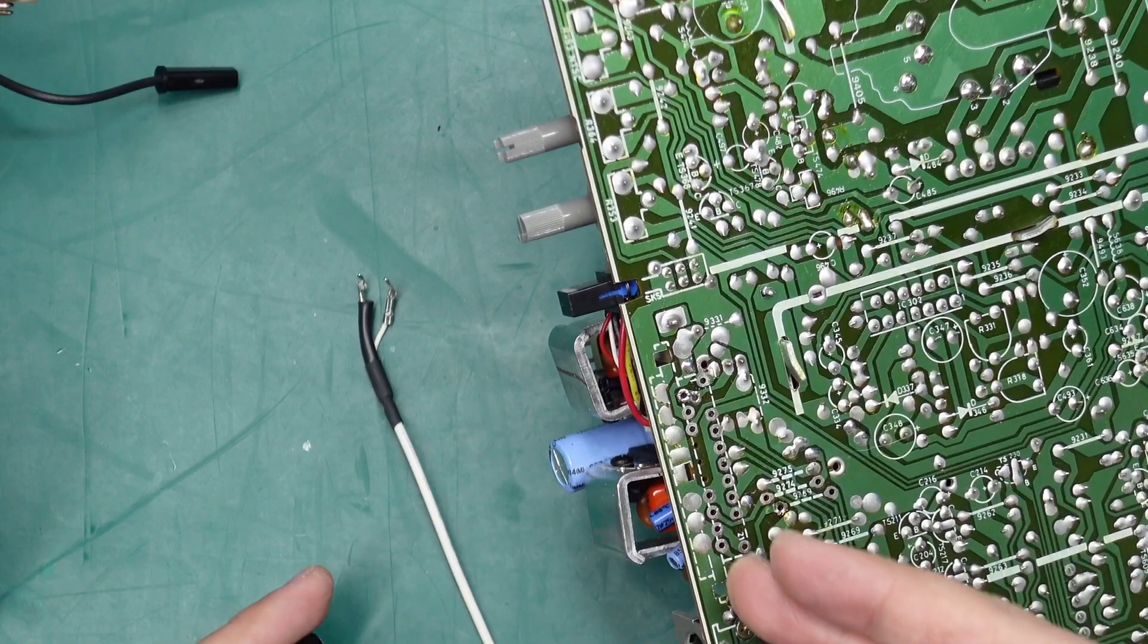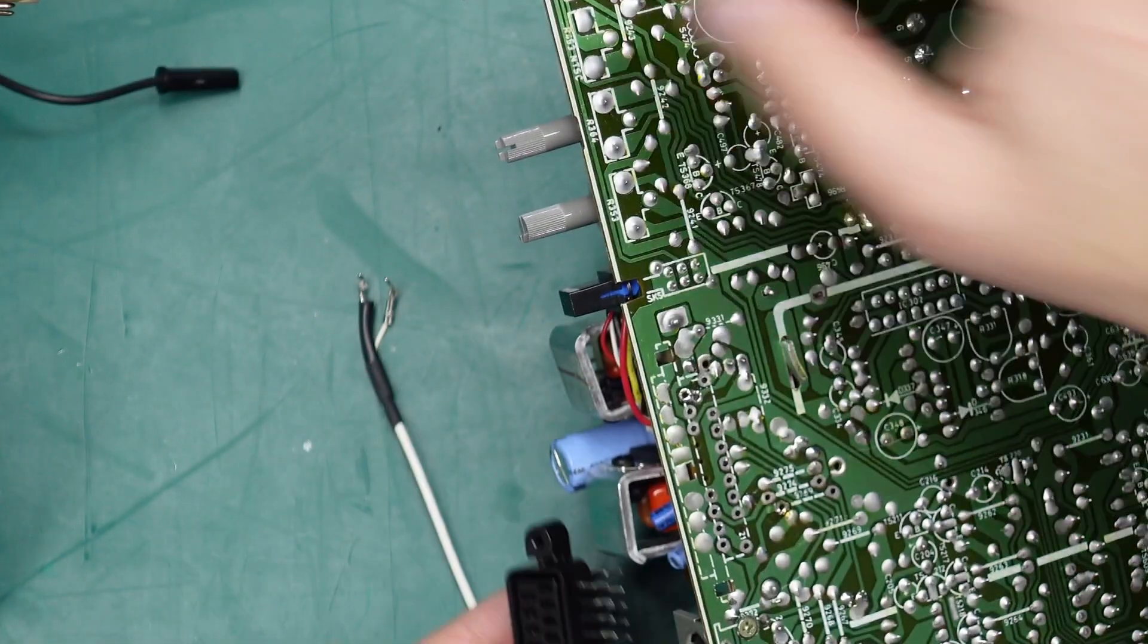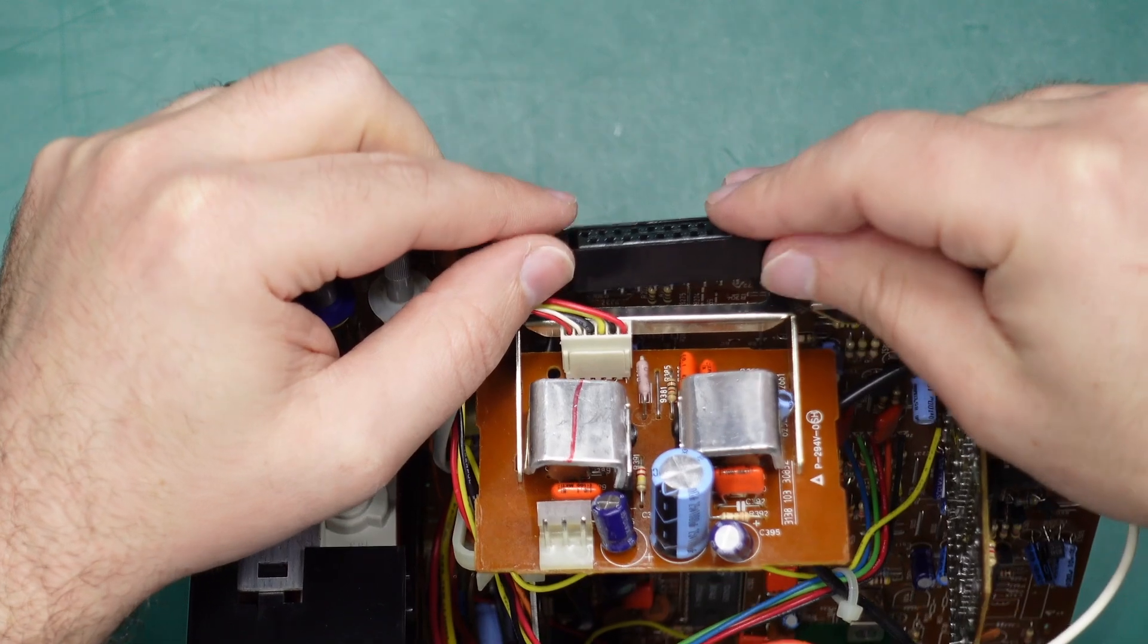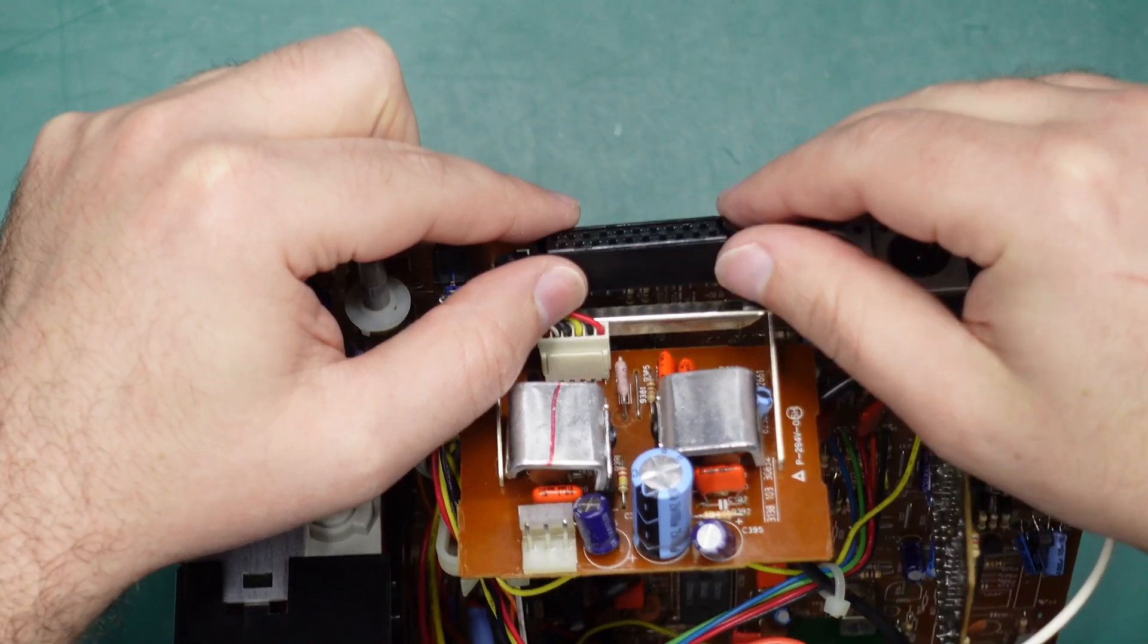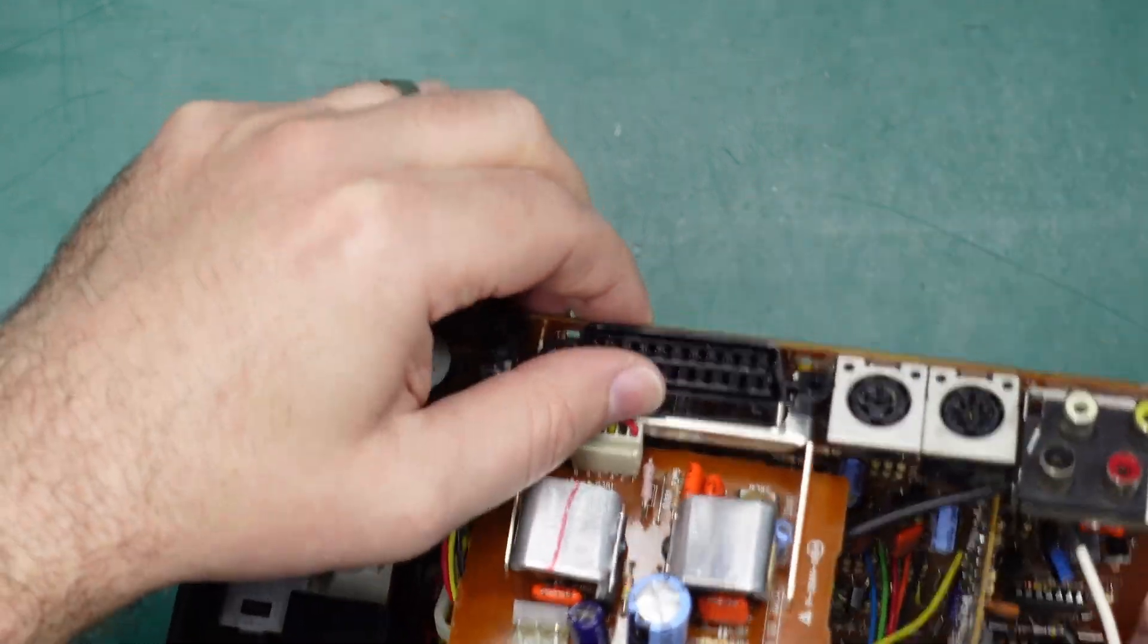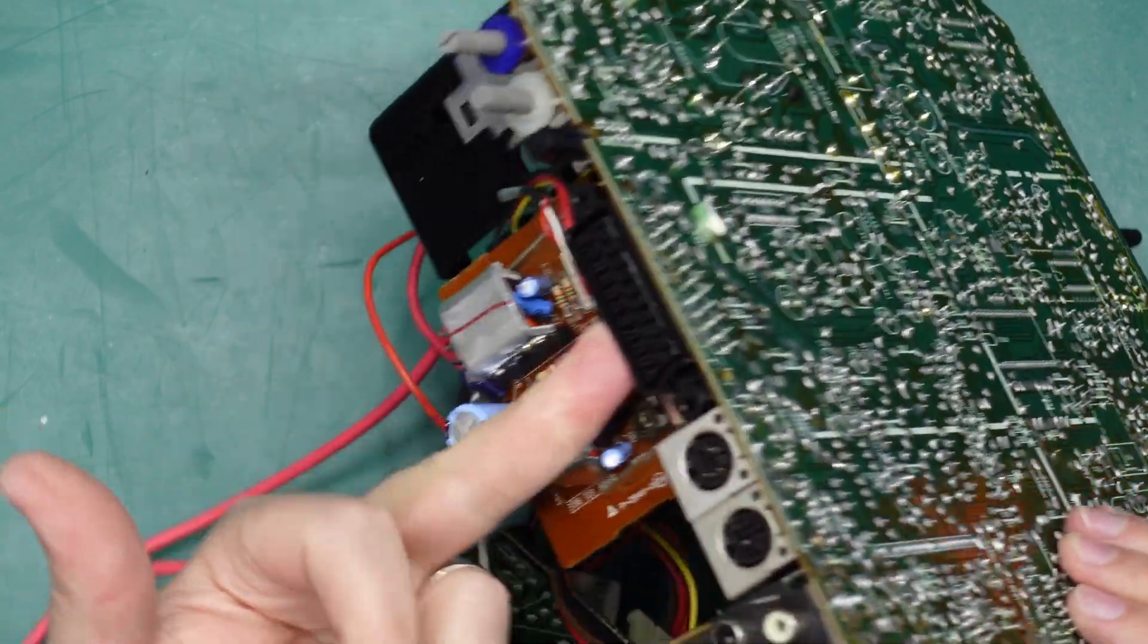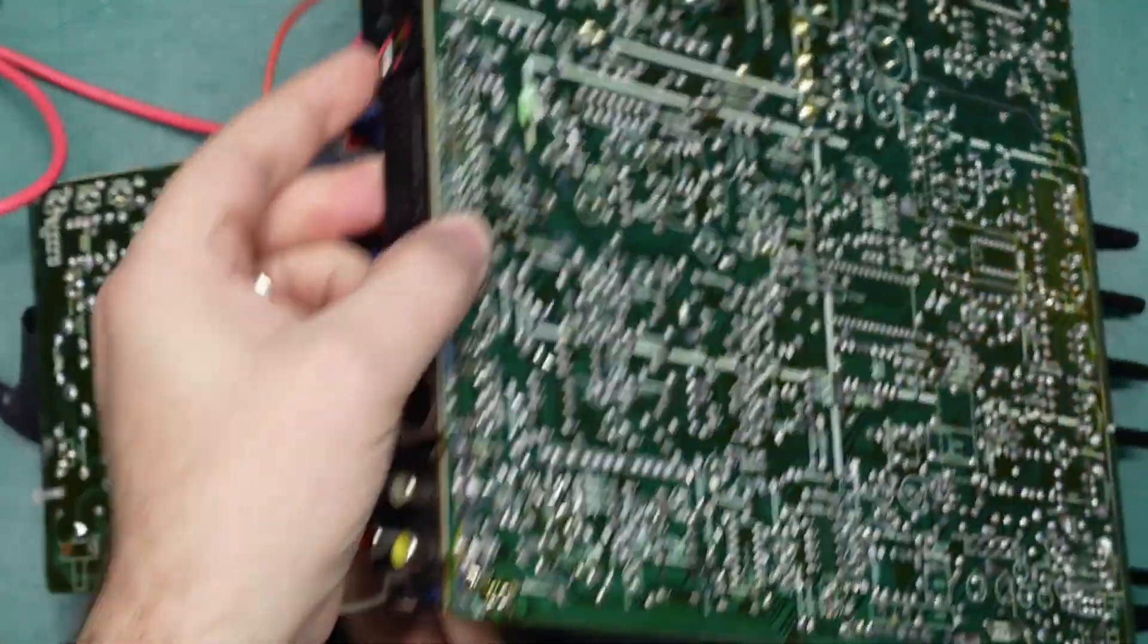So you'll need to remove the solder from those holes and then put in our SCART connector, and with those holes free you should be able to do this without removing this metal bracket here. You just have to jiggle it around for a little bit, and our SCART connector is now in place. Let's solder that in.